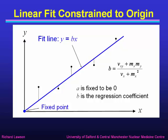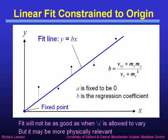So that's the fit line when a is fixed to be 0 — b is the regression coefficient that remains. We've got two different ways of doing a linear least squares fit: one which is unconstrained giving y = a + bx, and one where a is constrained to be 0 to make it go through the origin. The fit constrained to go through the origin won't be as good as when a is allowed to vary, but if you know that your measurements must go through x = 0, y = 0, it may be more physically relevant.